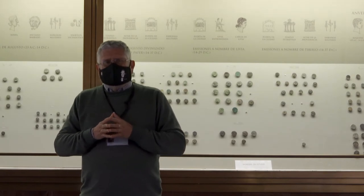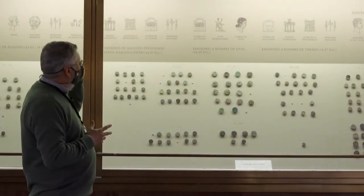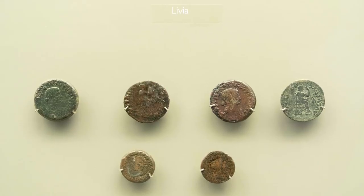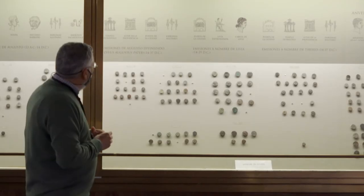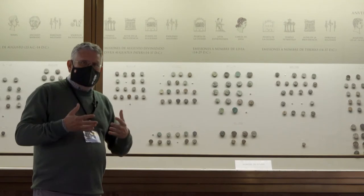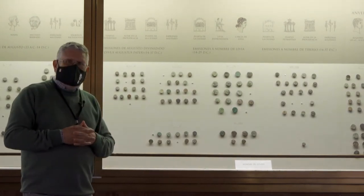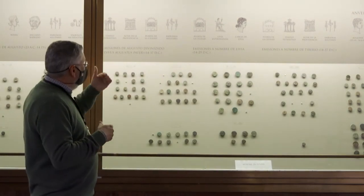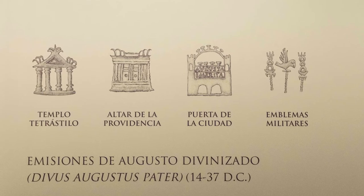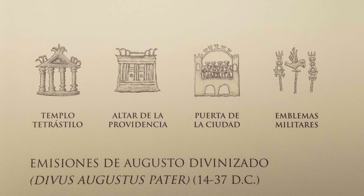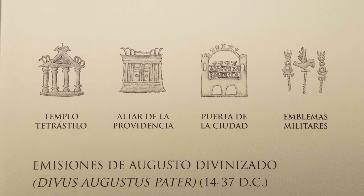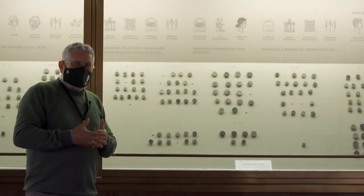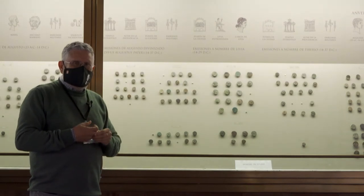A la muerte de Augusto, en la época de Tiberio, se acuña otra serie de monedas en la colonia, y muchas de ellas hacen alusión a la muerte y la divinización de Augusto. Augusto aparece en ellas muchas veces con la corona radiada, como está divinizado, y el nombre de Divus Augustus Pater, coincidiendo con esa divinización. Son muy interesantes porque, aparte de repetir el motivo de la puerta, que se va repitiendo sistemáticamente ya que la puerta de la ciudad se ha convertido en un emblema heráldico de la misma, se hace alusión a otra serie de obras y monumentos que seguramente se realizaron con motivo de esa divinización de Augusto.